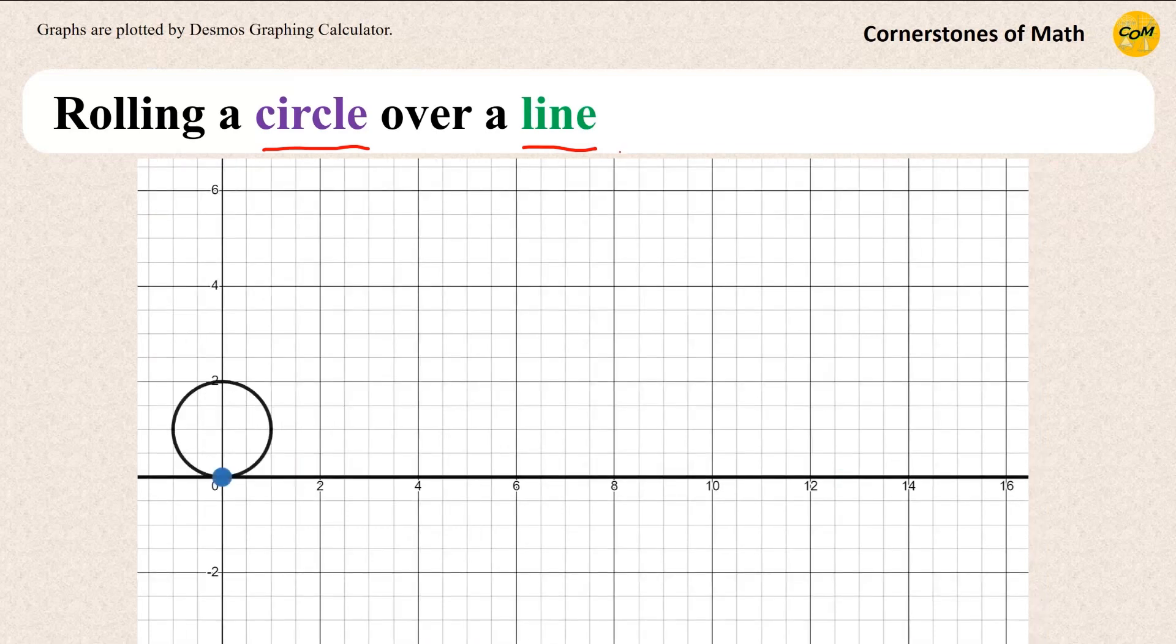For example, consider rolling a circle with radius 1 over the x-axis and focus on the movement of a point on the circle whose initial position is 0,0. As the circle rolls, this point generates this red curve that you're currently watching, which is called the cycloid.